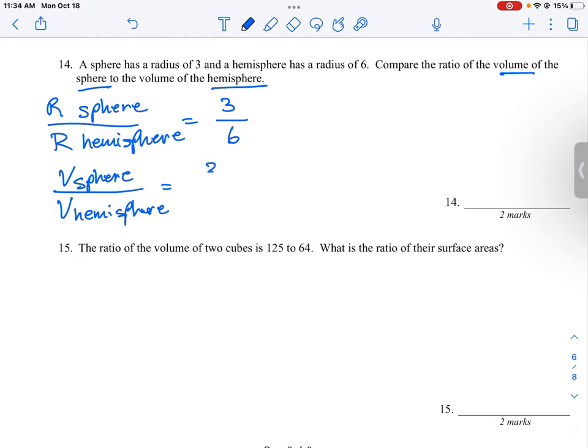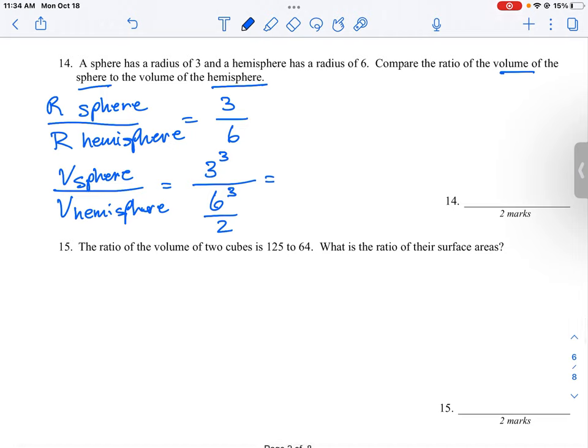So the volume of the sphere should be 3 cubed, and the volume of the hemisphere, well if we were talking about a volume of a sphere, we would just cube the 6. But a hemisphere is a half, so we have to divide that 6 cubed by 2. So this is what we're actually looking to find here.